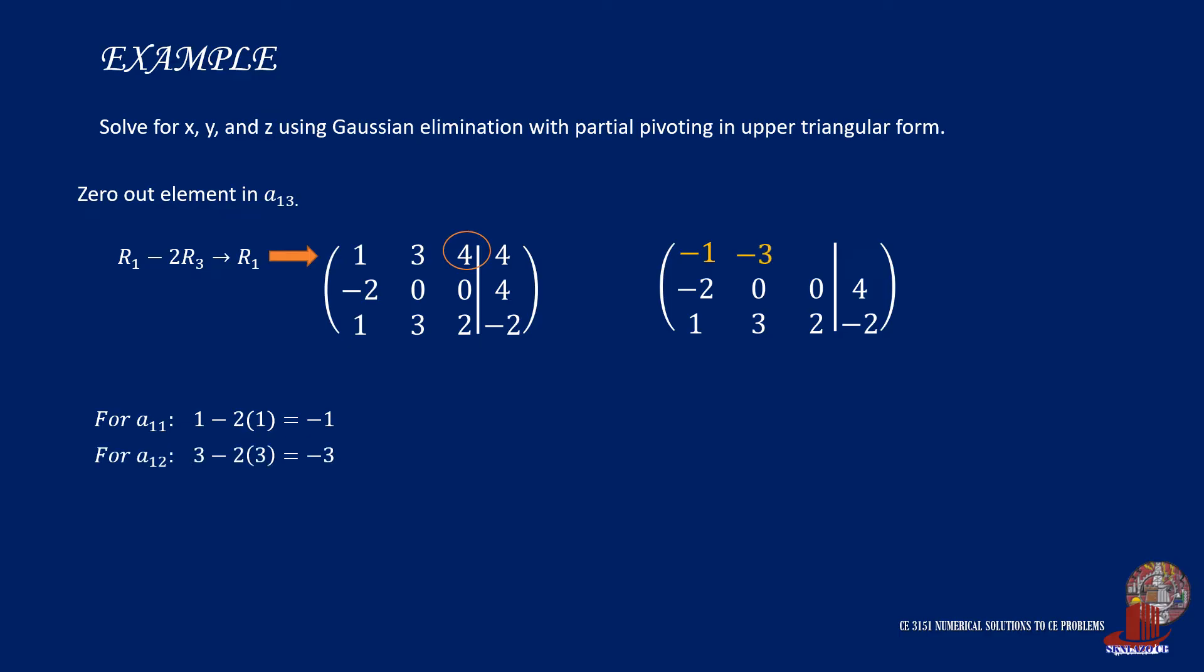Element a12 gives 3 minus twice of 3 resulting to negative 3. Then a13 has 4 minus twice of 2 making the new element 0. Then the constant is 4 minus twice of negative 2 to give 8.